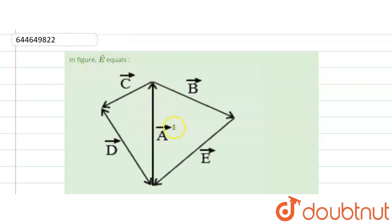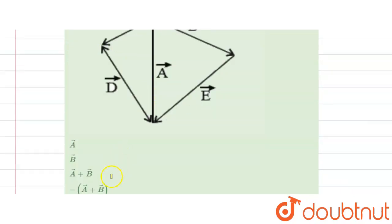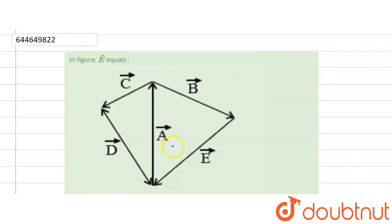This figure is shown and here we have to find e. Four options are given. Now here we can use, for the given figure, using triangle law vector addition.